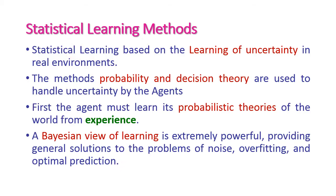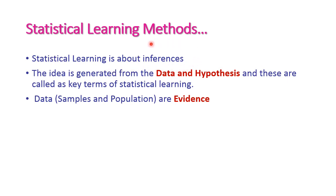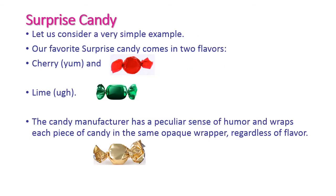Statistical learning is about inferences. The key ideas are generated from data and hypothesis — these are the key terms of statistical learning. Data is nothing but samples and populations. Using these samples and populations, we form hypotheses, which are otherwise called as evidence of this particular learning method.